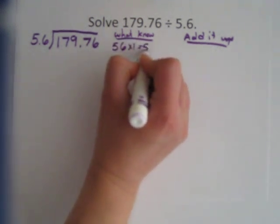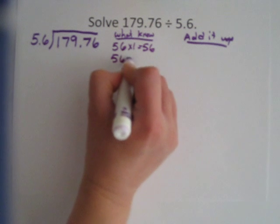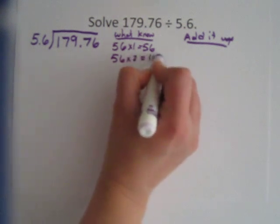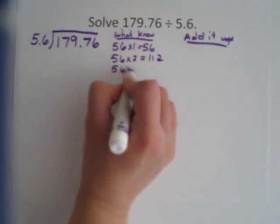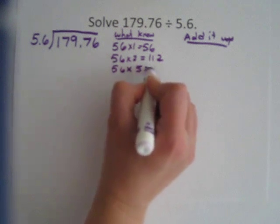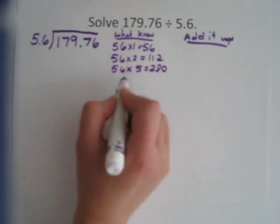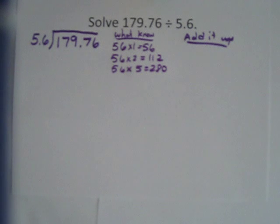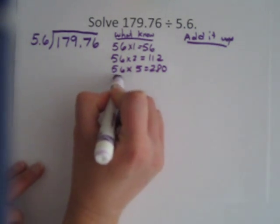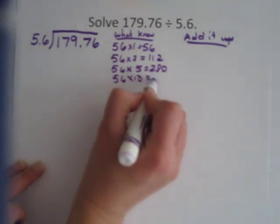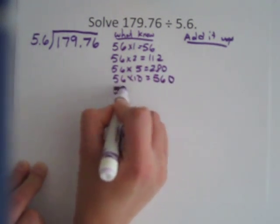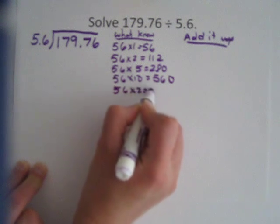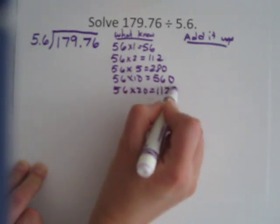So we're going to do what we know with 56. 56 times 1 is 56. 56 times 2 is 112. 56 times 5 is 280. If I didn't know that I'd solve it off to the side. 56 times 10 is 560. 56 times 20 is 1,120.